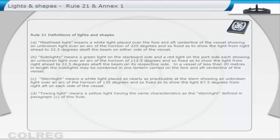Towing light means a yellow light having the same characteristics as the stern light defined in paragraph C of this rule. All round light means a light showing an unbroken light over an arc of the horizon of 360 degrees.